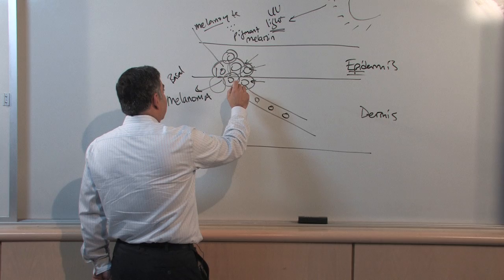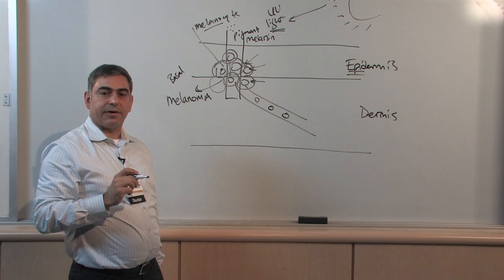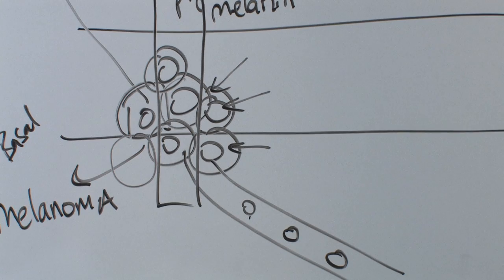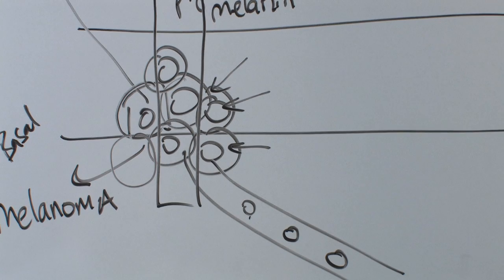When we first diagnose melanoma, we do a punch biopsy, and this punch biopsy is very important because it gives us an understanding of what the melanoma looks like under a microscope. It gives us features like how deep it was.